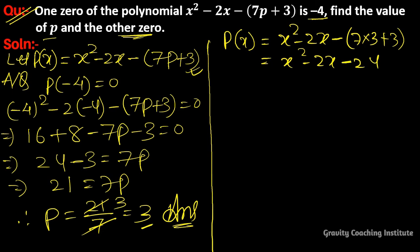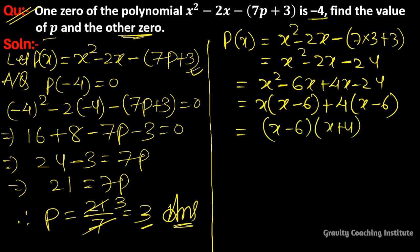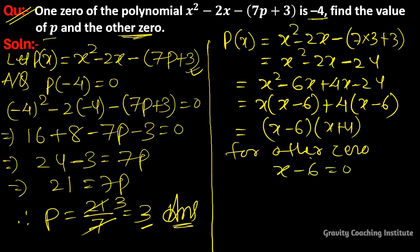Splitting the middle term of x² - 2x - 24: we get x² - 6x + 4x - 24. Taking x as common from the first two parts gives x(x - 6), and 4 as common from the last two parts gives 4(x - 6). So we get (x - 6)(x + 4). For the other zero, x - 6 = 0, so x = 6.